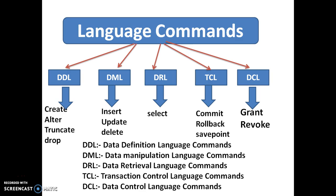The TRUNCATE command is used to delete all the table data at once. For example, if your table has a thousand records and you want to delete all the data but not the structure of the table, you use TRUNCATE. The DROP command is used to permanently remove a database, table, or column from the database.